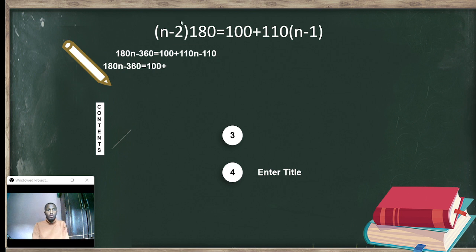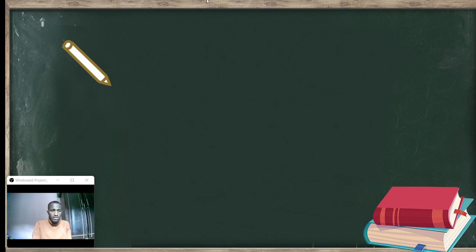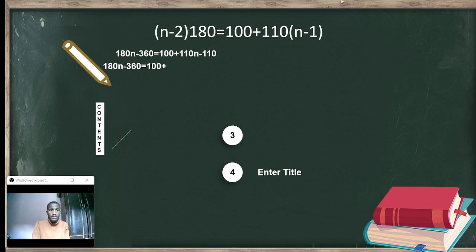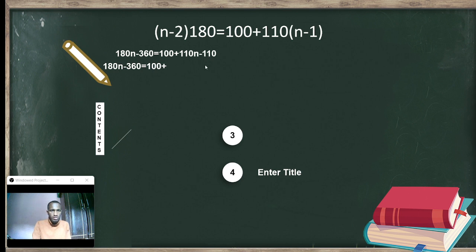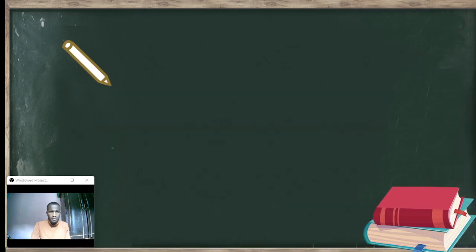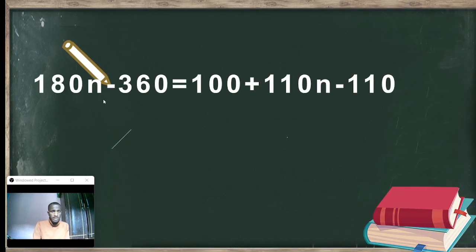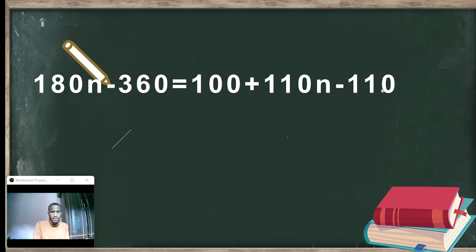The next step: multiply out to get 180n minus 360 equals 100 plus 110n minus 110. So 100 minus 110 gives minus 10, so we have 180n minus 360 equals minus 10 plus 110n.